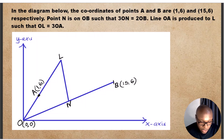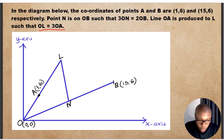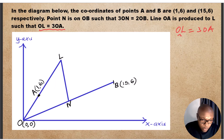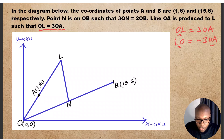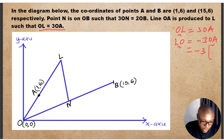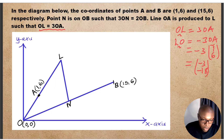Do we have LO and ON? For LO, we use the condition that OL equals 3OA. Therefore LO, moving in the opposite direction, will be negative 3OA. OA is (1, 6), so this gives negative 3 times (1, 6), which is (−3, −18). So that is LO.